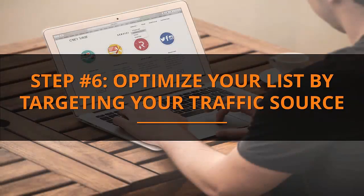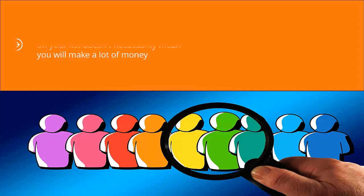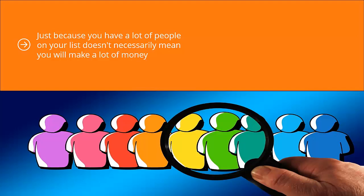Step number six: optimize your list by targeting your traffic source. Just because you have a lot of people on your list doesn't necessarily mean you will make a lot of money. There are a lot of list marketers with huge bloated lists who are struggling. The reason is that they made the all-too-common mistake of assuming that the more the merrier — that's not going to cut it in modern email marketing.